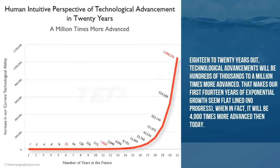Now if we look out 20 years, technological advancements will be hundreds of thousands to a million times more advanced, making our first 14 years seem flat-lined — when in fact those years were 4,000 times more advanced than today. At that point we'll be looking at things like regenerative medicine and computer-brain interfaces at very low price points. It's very hard to predict where things will be, but we know that technologically we're advancing very quickly.